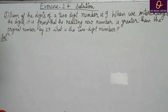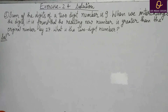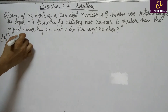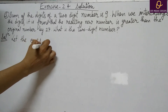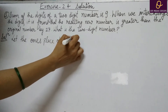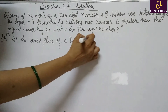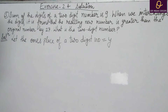Now next question — Question number 3. Sum of the digits of a two-digit number is 9. When we interchange the digits, it is found that the resulting new number is greater than the original number by 27. What is the two-digit number? तो इसके लिए: let the one's place of a two-digit number equal to y.